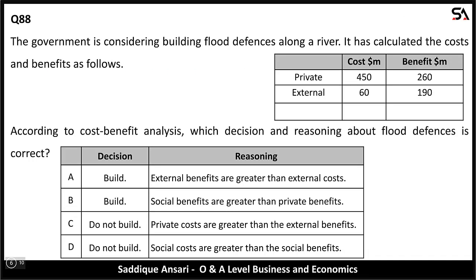Next: the government is considering building flood defenses along a river. Costs and benefits are given in dollar millions, with private and external costs and benefits provided. Social cost = private cost + external cost = 450+65=515 (approximately 510). Social benefit = private benefit + external benefit = 260+190=450. Social cost is greater than social benefit, hence this decision will not be taken and flood defenses should not be built.